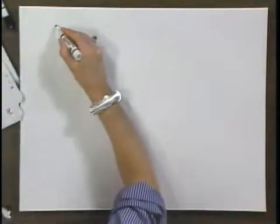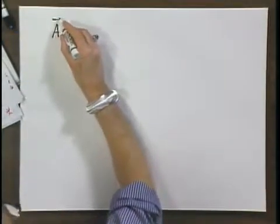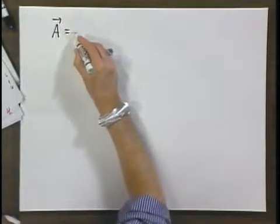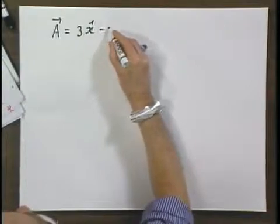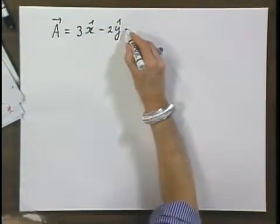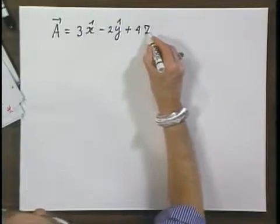Suppose I have a vector A, which is a familiar one. We've used it several times. Minus two Y plus four Z roof.